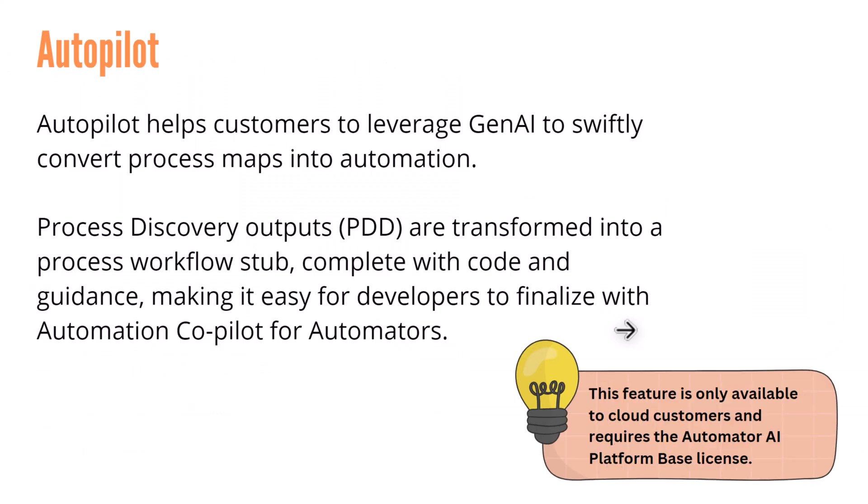Then we have Autopilot. Autopilot helps customers leverage Gen AI to convert their process maps into automation — right from discovery to creating a workflow and building your automation. It makes it easy for developers to create an end-to-end process with an initial framework already created. For example, based on your requirements, a bot and workflow are already generated, with certain modules already coded using Automation Co-Pilot for Automators. All you have to do is tweak the auto-generated automation, saving effort by not starting from scratch.